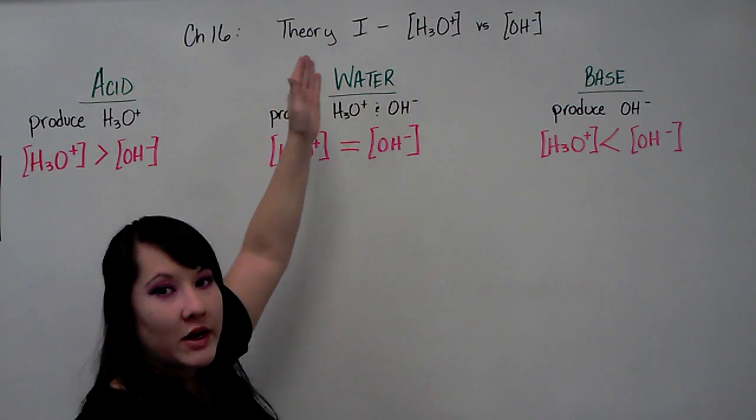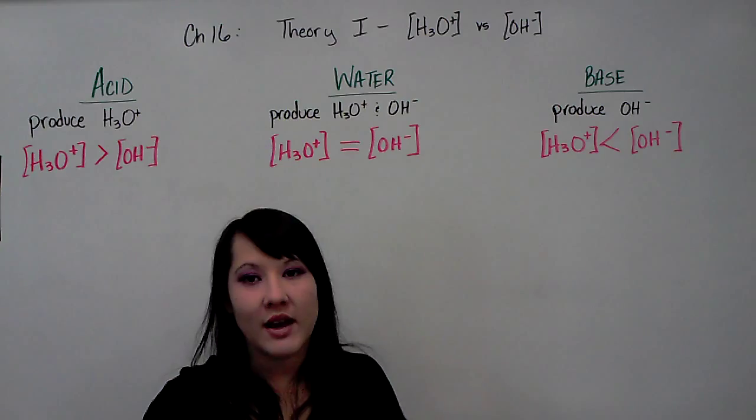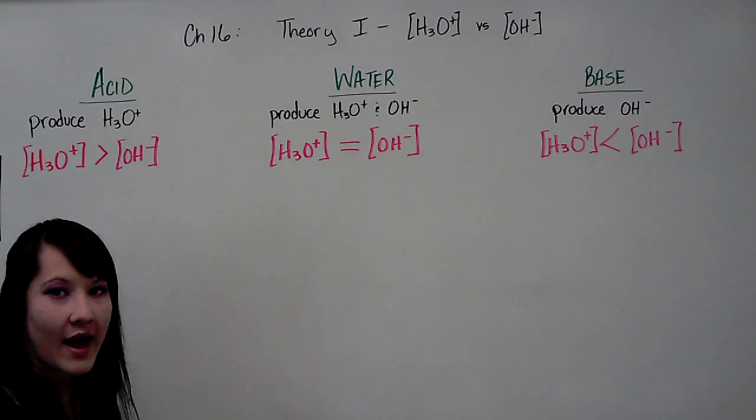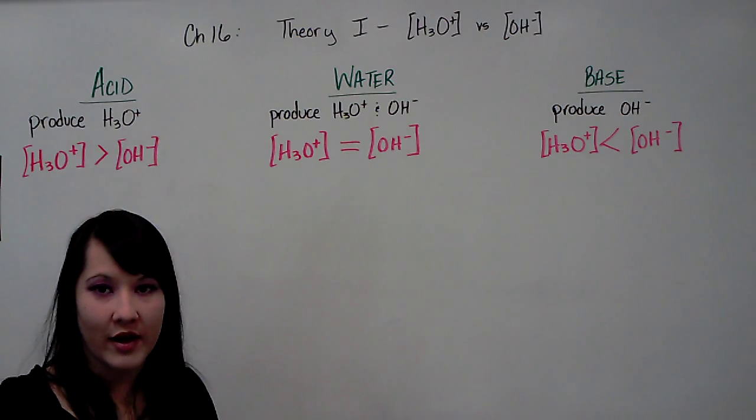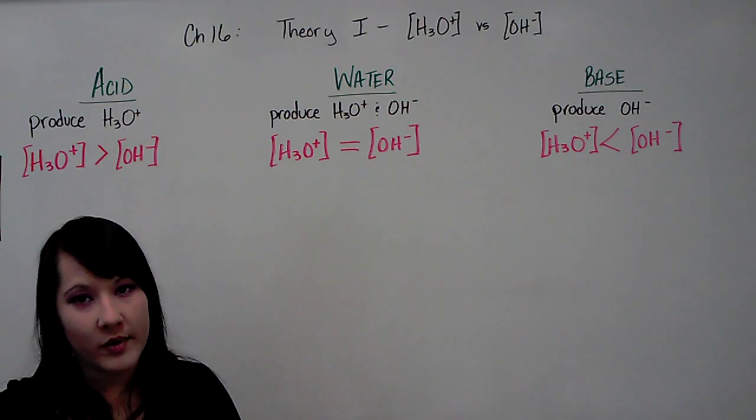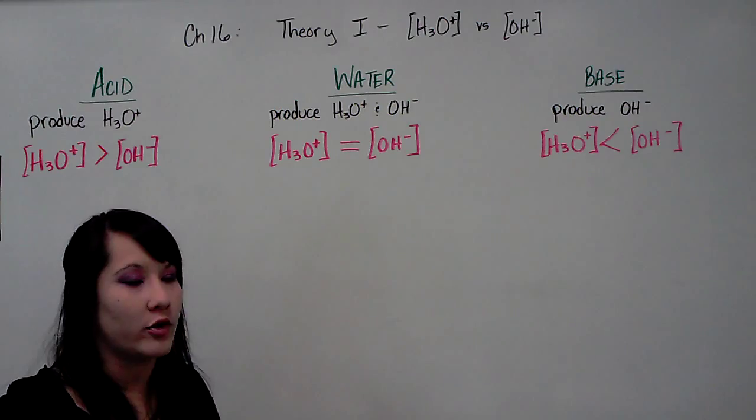Chapter 16, Theory 1: Hydronium vs. Hydroxide. Remember that depending on the amount of hydronium or hydroxide found in a solution will determine if it is acidic, neutral, or basic.